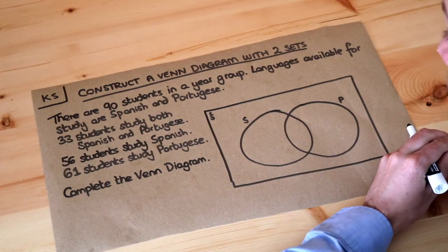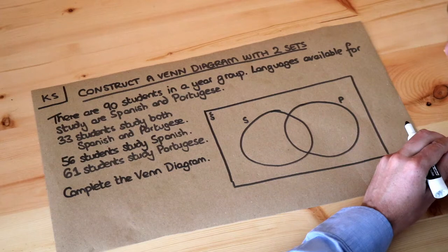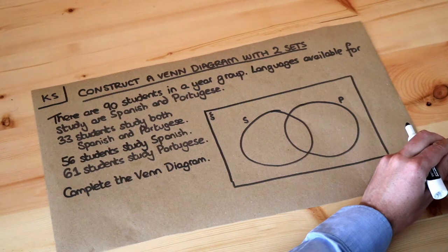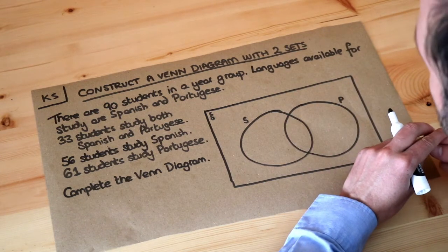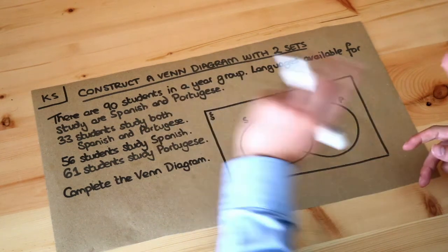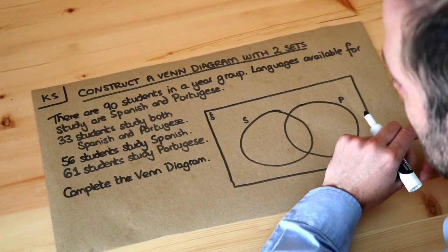Hello and welcome to this Dr Ross Mass Key Skill video on constructing a Venn diagram with two sets. A Venn diagram is a visual way we can use to represent sets. A set is just a collection of items — for example, the set might be all the students who study Spanish in a class.